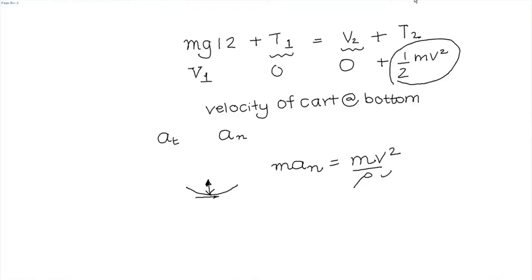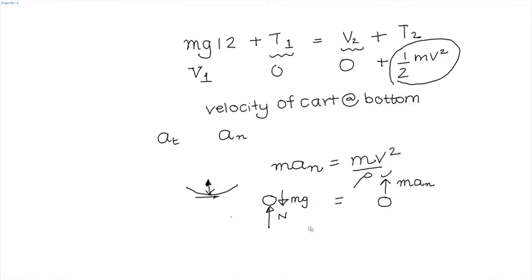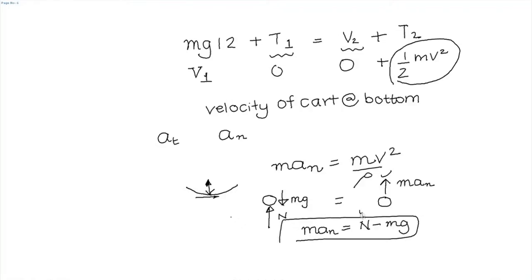V squared we already found from the energy equation and rho is given as 6 meters, so we can find the normal reaction. Let us draw the free body diagram of the cart. The forces acting on the cart are the normal reaction and gravity. So m*a_n equals N minus m*g, and from this we can find the value of the normal reaction.